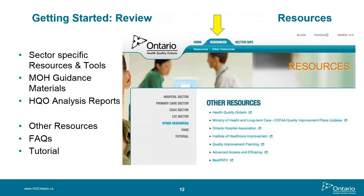You don't need to be logged in to access the resources or the sector's QIP page. The Resources tab contains sector-specific tools such as a link to the guidance document and previous QIP analyses. Other resources include links to other organizations and associations. There are Frequently Asked Questions covering the Navigator, general help, QIP submissions, data, and work plan. Finally, there's a tutorial section with a video tutorial on how to use the Navigator, which is currently being updated and will be posted in December.